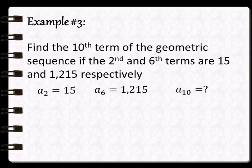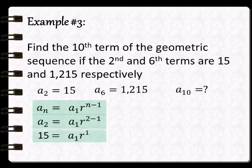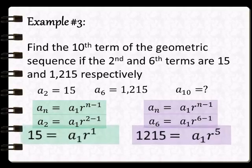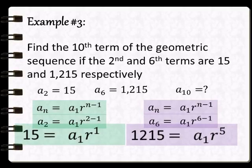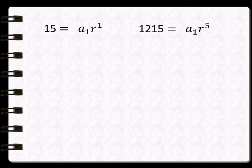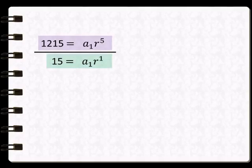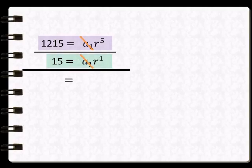Para mahanap po na natin yung a sub 1 o yung first term at ang common ratio, substitute natin yung mga given sa formula. So, 15 is equal to a sub 1 times r raised to 1. Next. 1,215 is equal to a sub 1 times r raised to 5. Divided by 15 is equal to a sub 1 times r raised to 1. So, 1,215 divided by 15 is equal to 81. R raised to 5 divided by r raised to 1. Papasok dito yung law of exponents. Kaya, r is raised to 4.